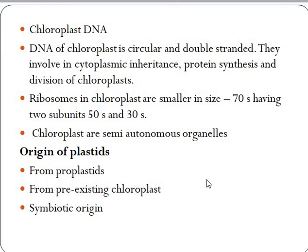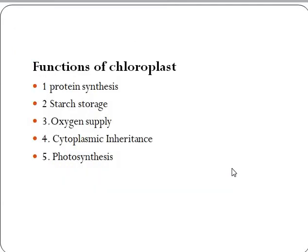There are different theories regarding the origin of plastids. One theory is that colorless membranous structures called proplastids are present within cells, and these proplastids develop and mature to become plastids. The second theory is that, since plastids contain DNA, a new plastid can form by division of a pre-existing parental chloroplast. The third theory is the symbiotic origin theory, which proposes that since chloroplasts have their own DNA and ribosomes, they were individual cells living symbiotically within eukaryotic organisms.